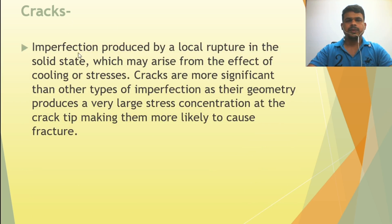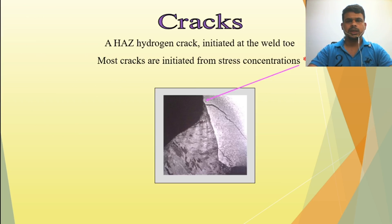Cracks are imperfections produced by local rupture in the solid state, which may arise from the effect of cooling or stress. Cracks are more significant than other types of imperfection because their geometry produces a very large stress concentration at the crack tip, making them more likely to cause fracture. This is a hydrogen crack initiated at the weld toe, and most cracks are initiated from stress concentration.